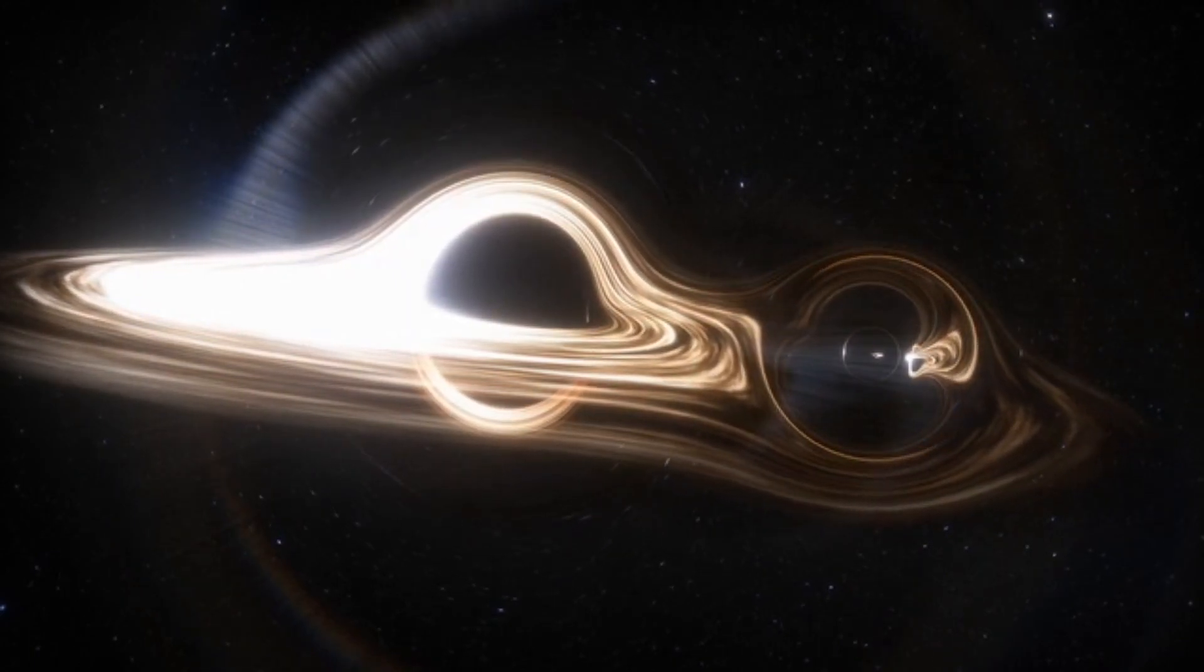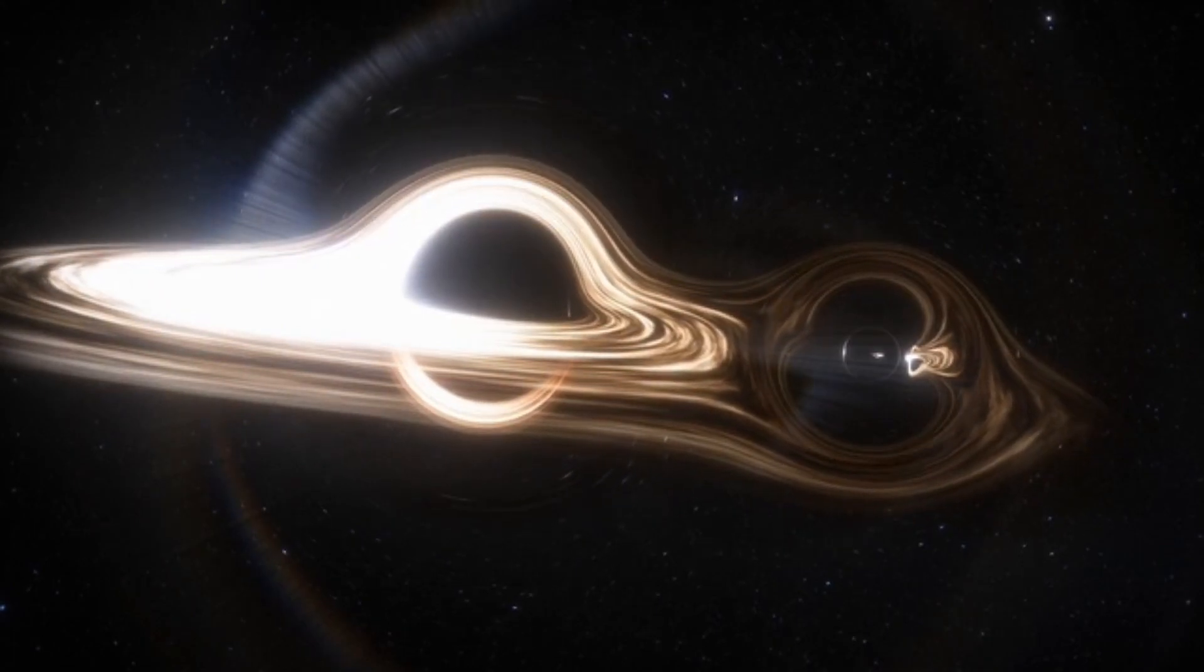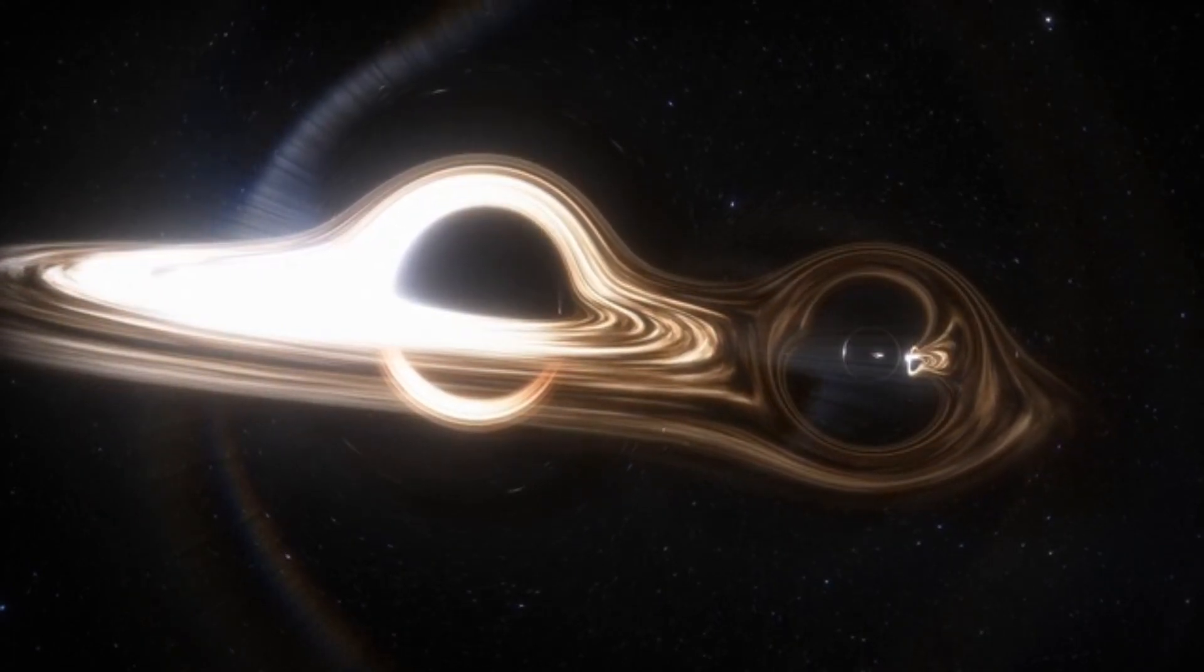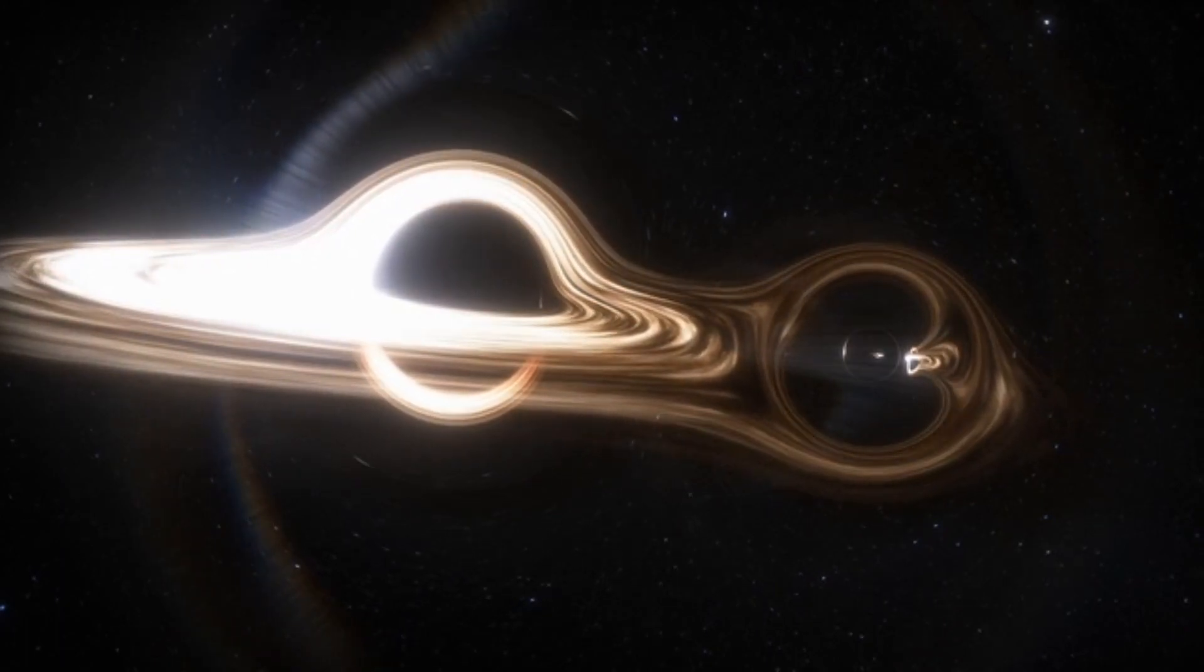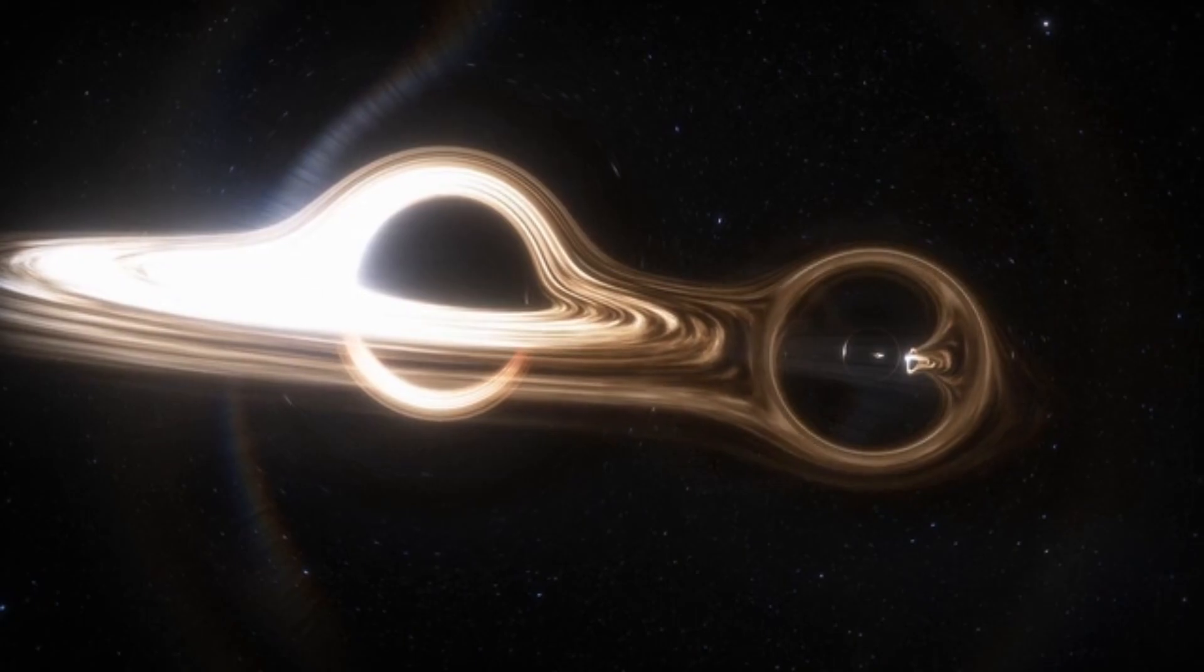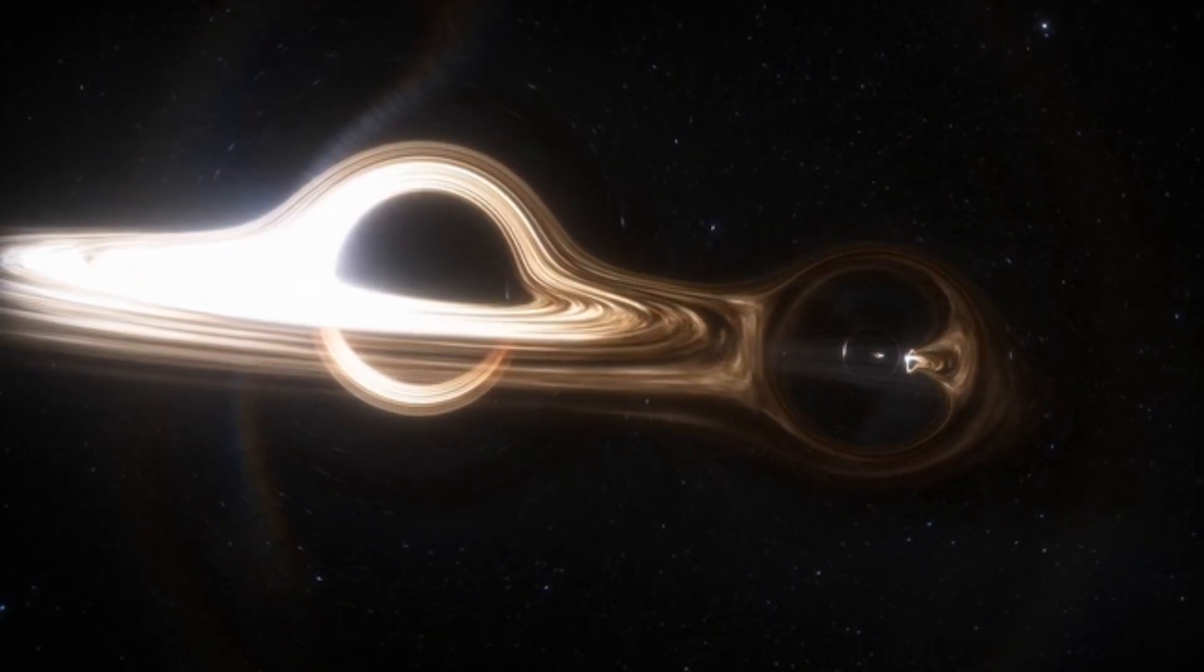And guess what? Using this technique, astronomers just found a whopper. This stellar black hole is named Gaia BH3 and it's a true monster, the biggest one ever discovered in the Milky Way. It's a staggering 33 times bigger than the mass of our sun. Can you imagine?